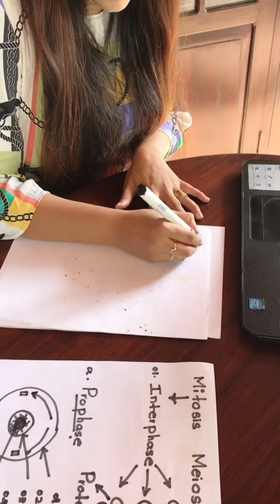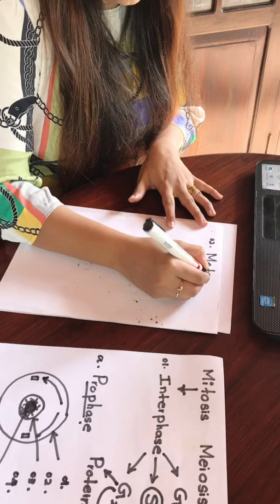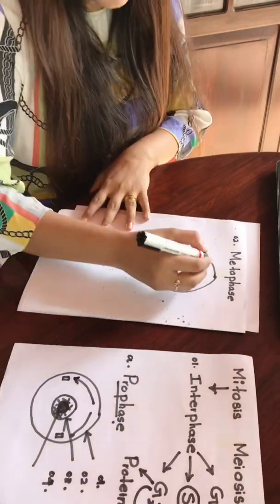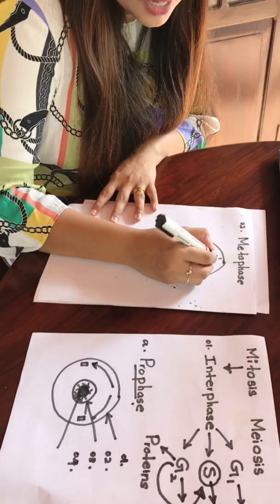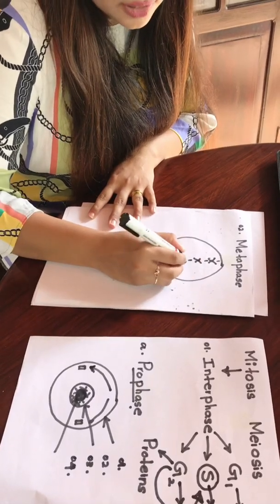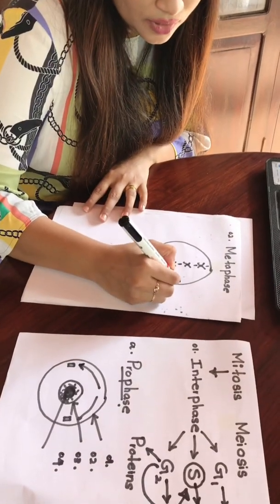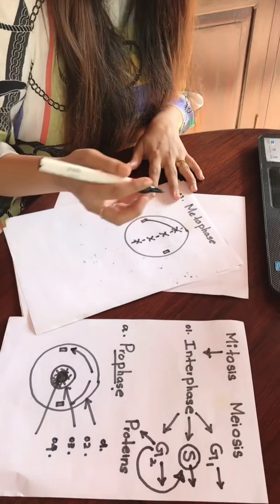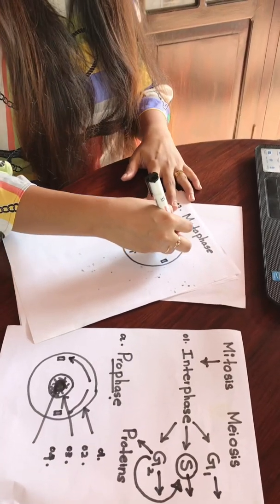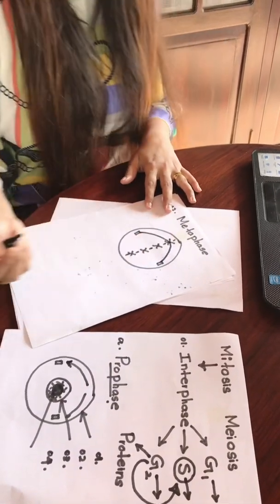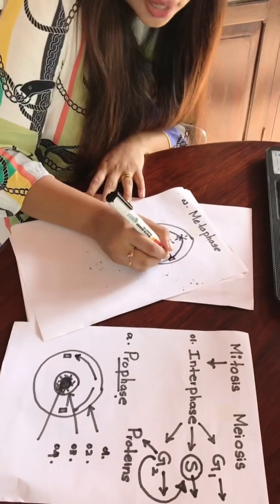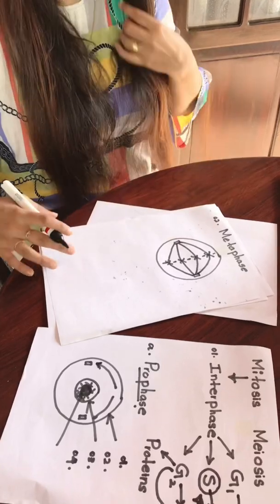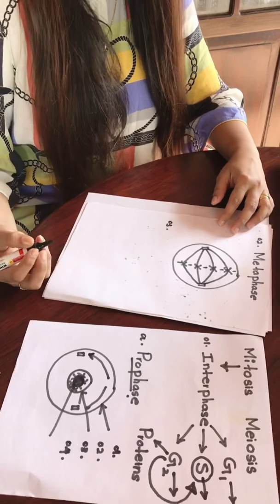Let's move into the second phase: metaphase. During metaphase, chromosomes align along the equator of the cell. Also, there are fibers in the cell that attach to the centromeres from both sides, connecting to the centrioles. This is how the cell looks during metaphase.